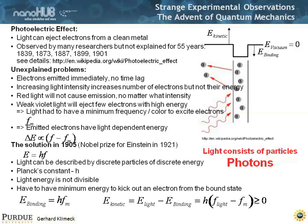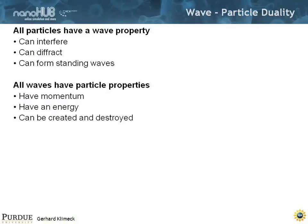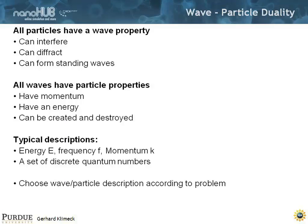So the upshot is that light consists of particles — photons. But wait, I thought light is a wave. So what's up with that? There's this particle-wave duality, where all particles have wave properties — they can interfere, diffract, and form standing waves. And all waves have particle properties — they have momentum, have energy, and can be created or destroyed. The description you choose depends on what interaction you want to look at. You use energy, frequency, and momentum as typical descriptors, and a set of discrete quantum numbers that describe the discreteness when needed. You choose which one depending on the problem you're trying to solve. There is no truth in one or the other — those two are strongly connected.